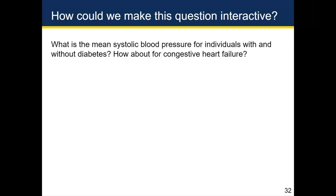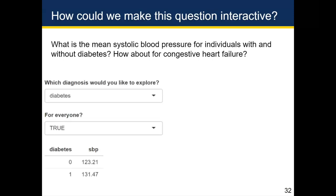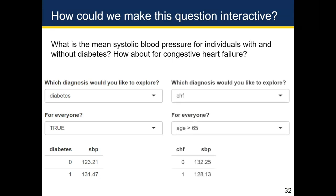So how could we make this question interactive? The question is: what is the mean systolic blood pressure for individuals with and without diabetes? How about for congestive heart failure? We had this question on lab five. For individuals without diabetes the mean systolic blood pressure was 123, and for individuals with diabetes it was 131. What if we wanted to answer this for people with CHF or for people of different ages — such that clicking the top menu to select CHF and selecting 'age > 65' in the second menu gives the correct information without any additional coding?